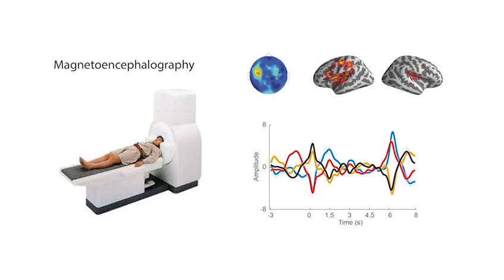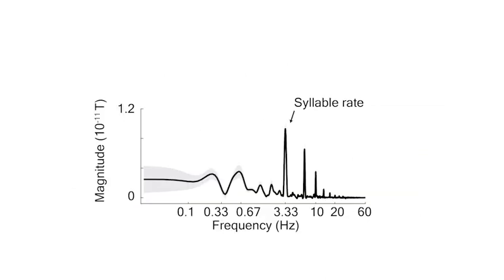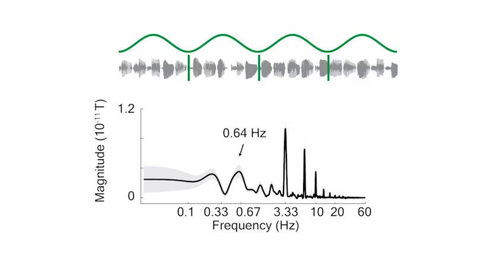We present those poem stimuli to native Chinese speakers and record their neural responses using magnetoencephalography. In their neural responses, we found signal components of several timescales. 3.33 Hz corresponding to the syllable rate in the speech stimuli. And we found other two components which do not exist in speech stimuli. The neural component, around 0.67 Hz, aligns with the line rate of the poem stimuli. So this suggests that the listeners know there are four lines and then actively segment the speech streams into line structures, according to their prior knowledge of the poem structures.